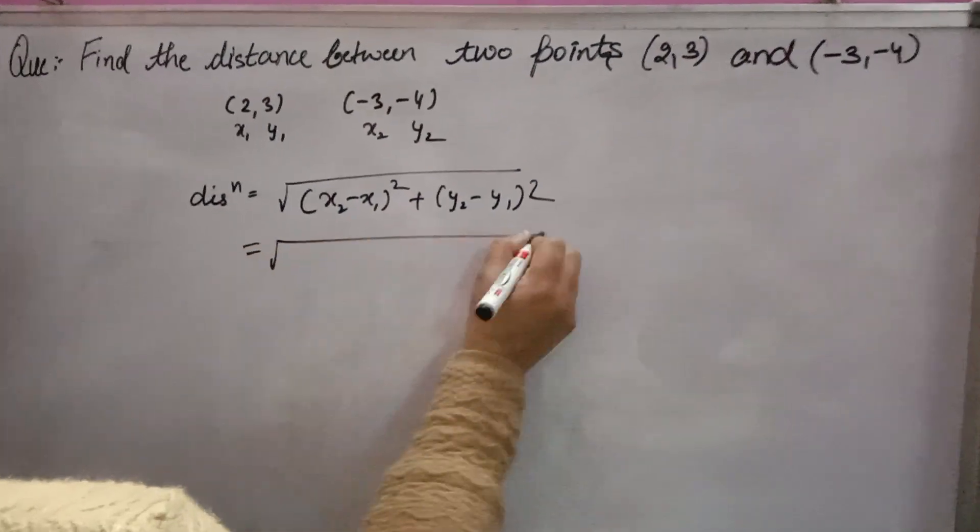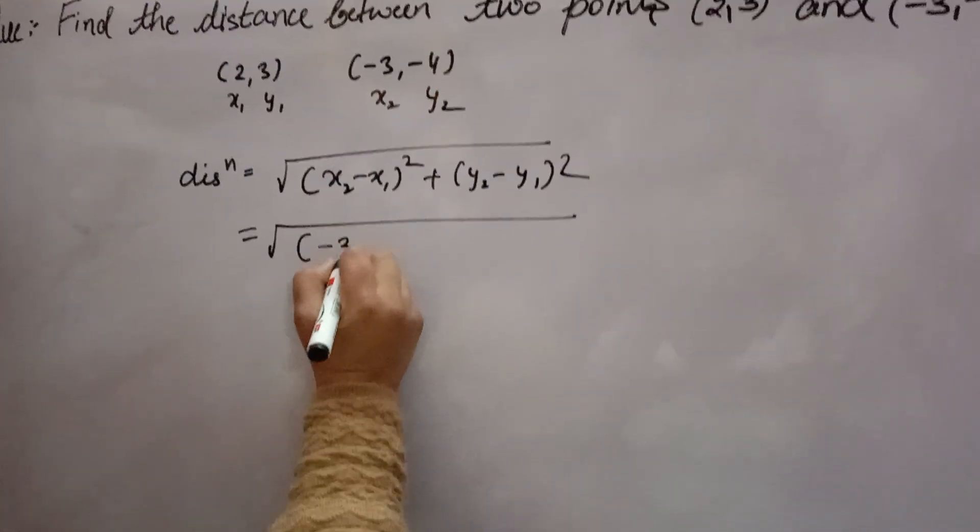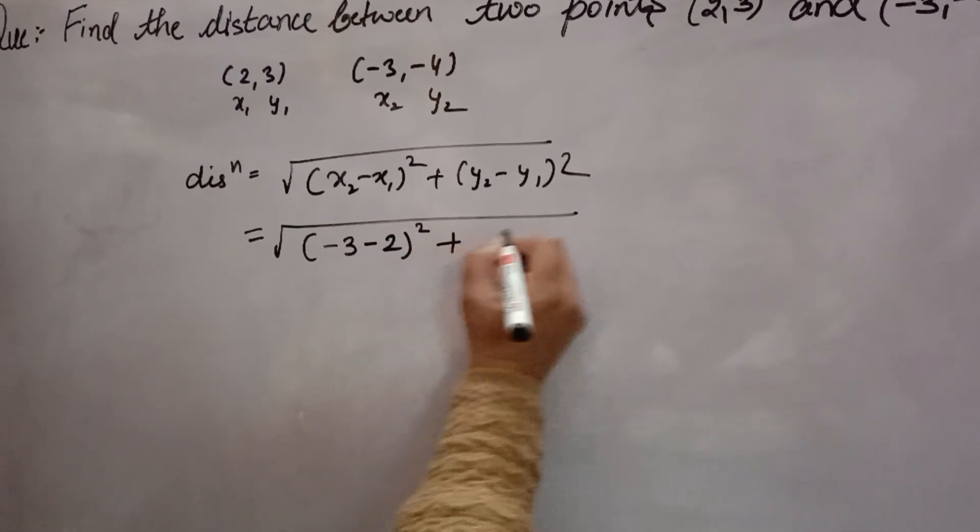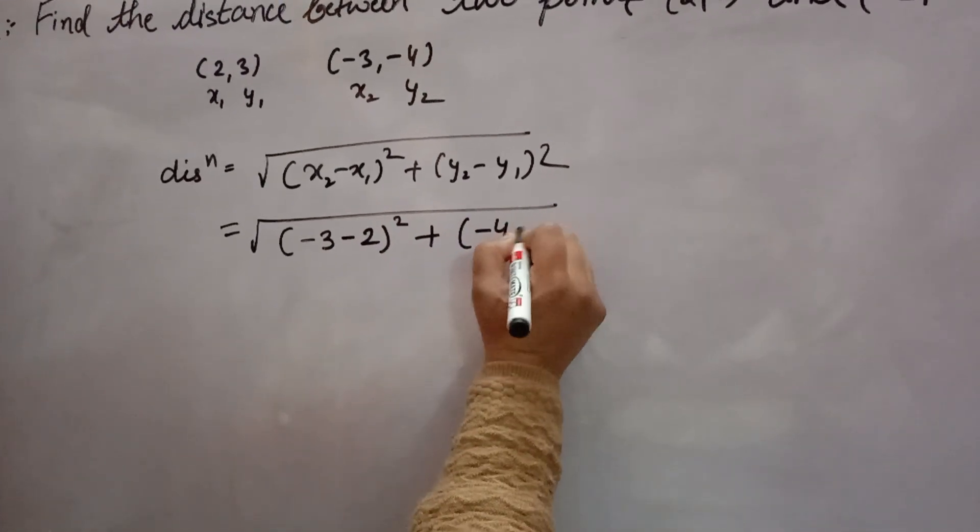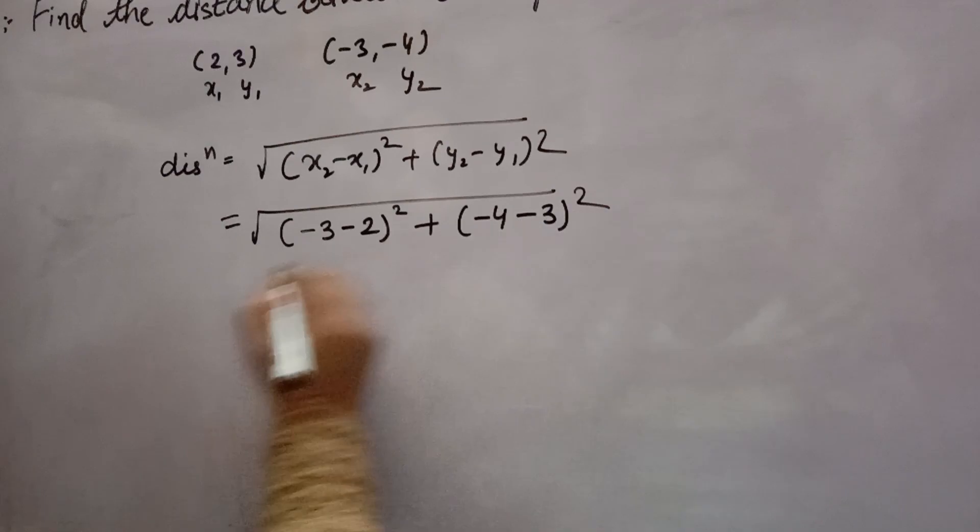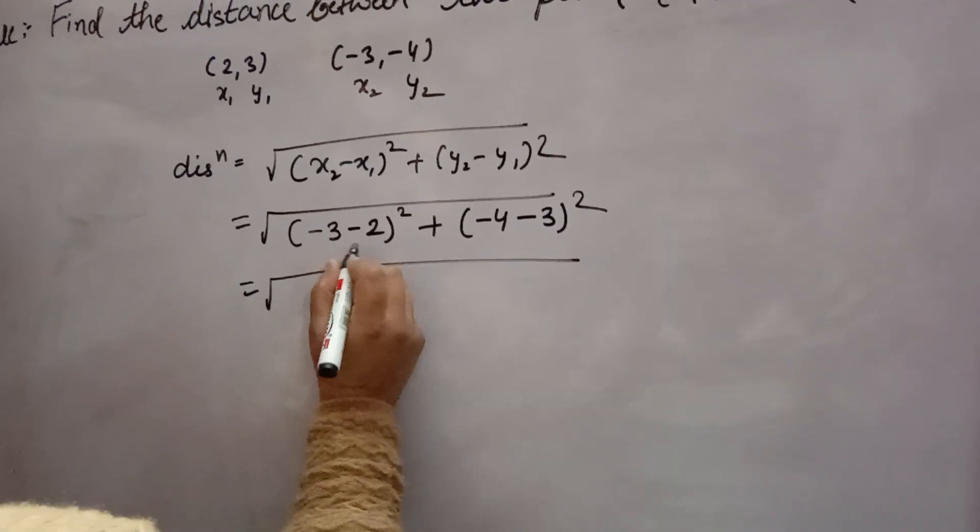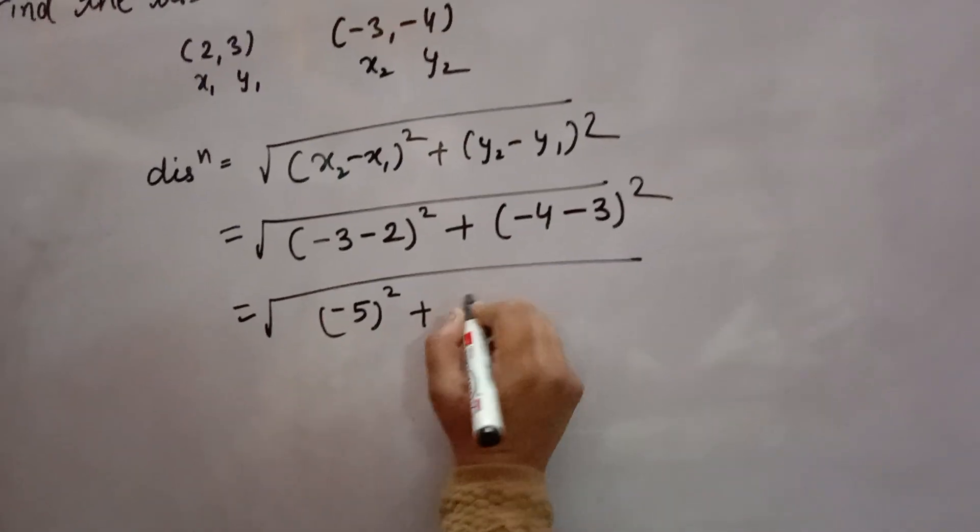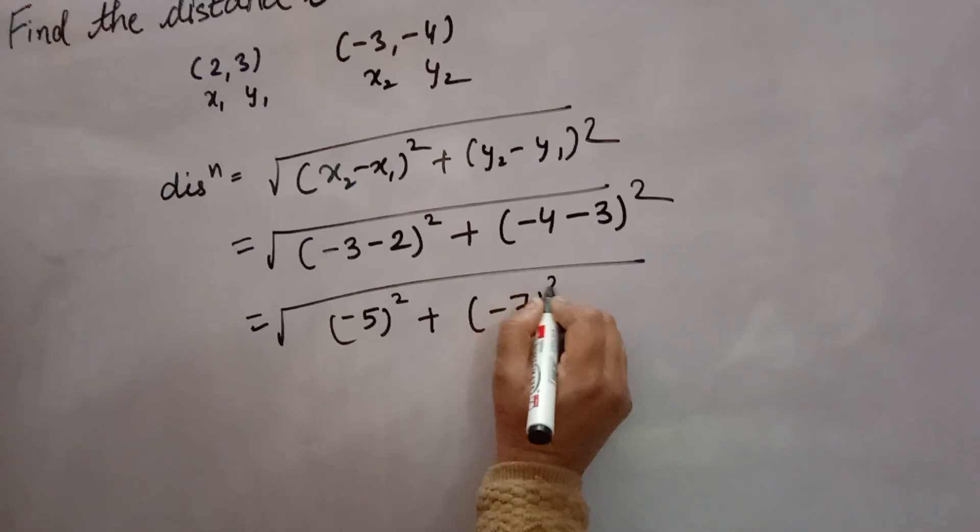Now we have to substitute the value. So x2 is minus 3, x1 is 2, so minus 2 whole square. y2 is minus 4, y1 is 3. Now, minus minus is plus, so you will add and sign of minus. So minus 5 square plus again minus 7 whole square.